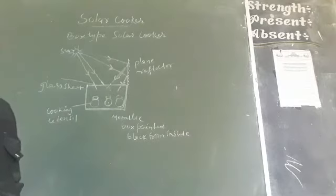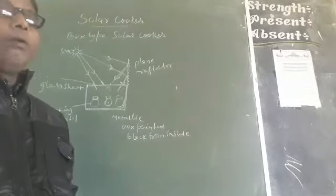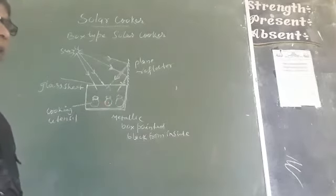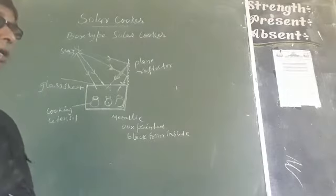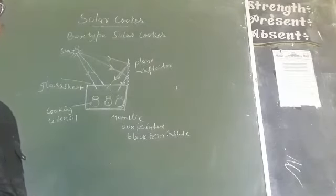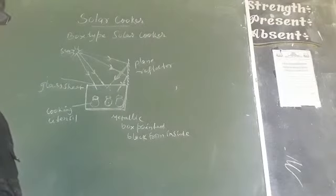But there are some drawbacks of this solar cooker. It can't be used when the sky is covered with cloud or in rainy weather. Solar cooker can't be used in cloudy and rainy weather.